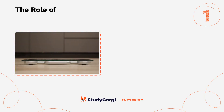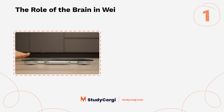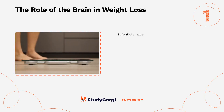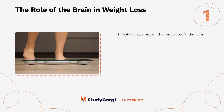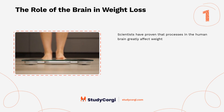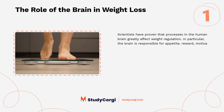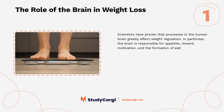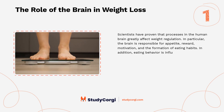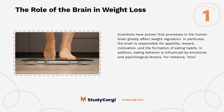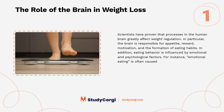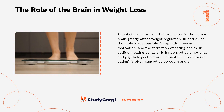The role of the brain in weight loss. Scientists have proven that processes in the human brain greatly affect weight regulation. In particular, the brain is responsible for appetite, reward, motivation, and the formation of eating habits. In addition, eating behavior is influenced by emotional and psychological factors — for instance, emotional eating is often caused by boredom and sadness.